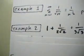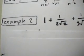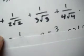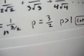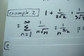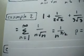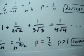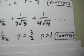Let's try example 2. Sometimes they might give you a sequence, and the first thing you're going to want to do is make it into a series using n's terms. So you take that sequence and make it the series from 1 to infinity of 1 over n times the square root of n, which is the same thing as 1 over n to the 3/2. In this case your p would be 3/2, and since p is greater than 1, it converges.